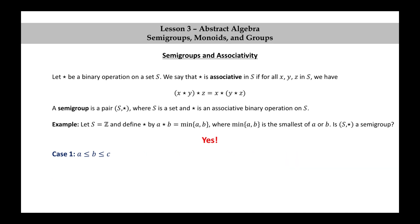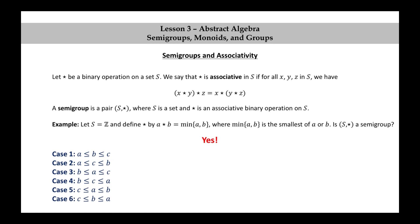So we checked case 1 — A less than or equal to B less than or equal to C — and case 2 — A less than or equal to C less than or equal to B. There are four other cases to check yourself: case 3 is B ≤ A ≤ C, case 4 is B ≤ C ≤ A, case 5 is C ≤ A ≤ B, and case 6 is C ≤ B ≤ A. Associativity holds for all six cases.